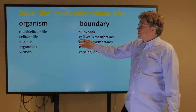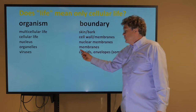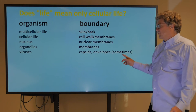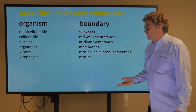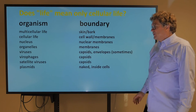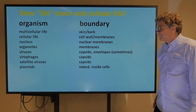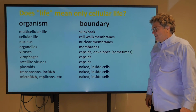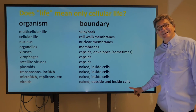There's cellular life — single cells with cell walls or membranes. A nucleus has a nuclear membrane. Organelles like mitochondria have a membrane around them inside the cell. A virus's boundary is a capsid, or sometimes an envelope. All viruses have capsids, but only some have envelopes. There are also viruses of viruses, called virophages, which have capsids, as do satellite viruses. Plasmids are the circular pieces of DNA inside bacteria — they're naked, without capsids. Transposons, large non-coding RNA, micro RNA, and replicons are also naked and inside cells. Viroids are naked but exist both outside and inside cells.